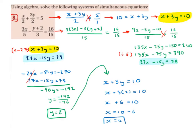So now I'm going to cross multiply. So 9x by 15 is 135x minus 5y by 15 is minus 75y, and minus 10 by 15 is minus 150. Bring over the equals and 15 multiplied by 16 is 240.